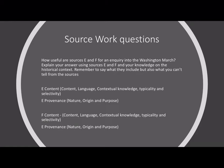In this paper there are source work questions, so you might get a question such as: 'How useful are sources E and F for an inquiry into the Washington march? Explain your answer using sources E and F and your knowledge of the historical context.' Remember to say what they include, but also what you can't tell from the sources. You will look at source E and examine the content — which is the content, language, contextual knowledge, typicality and selectivity — and then the nature, origin and purpose. Then you'll do the same for source F.